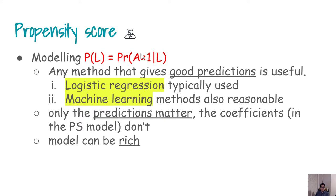For example, in a previous example I used, a person is either suffering from rheumatoid arthritis or does not have any arthritis, so A can be either 1 or 0. Whenever you have a binary exposure and you are adjusting for a number of covariates, you can use logistic regression. There are also some machine learning methods that can handle binary outcomes. In this regression, the outcome is the exposure variable and L is the list of covariates, and the goal is prediction.